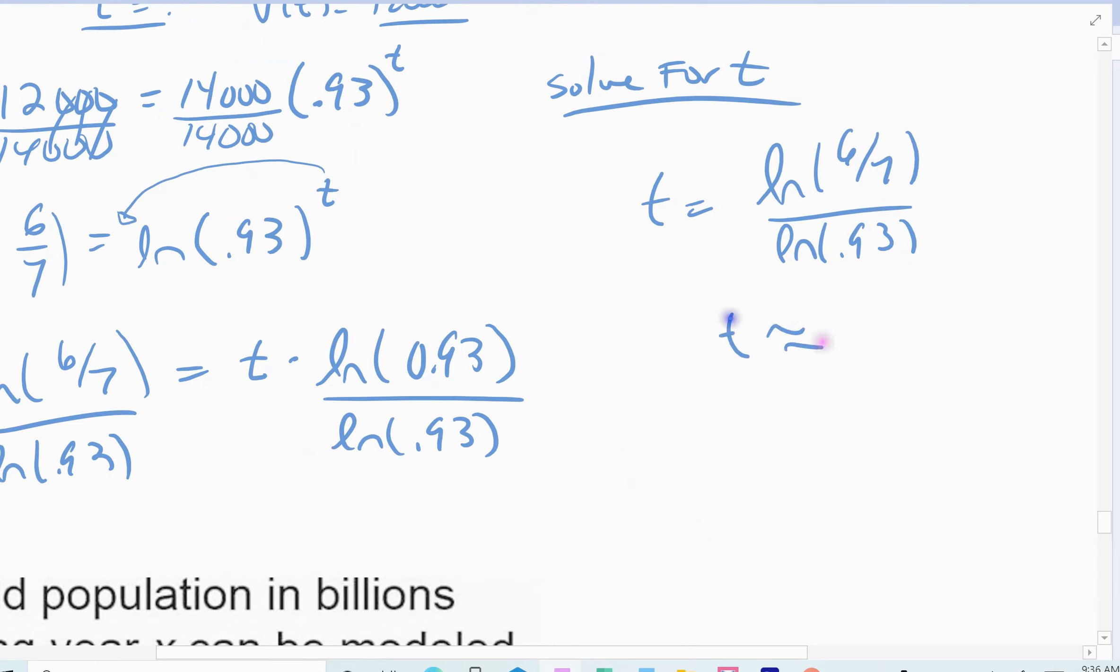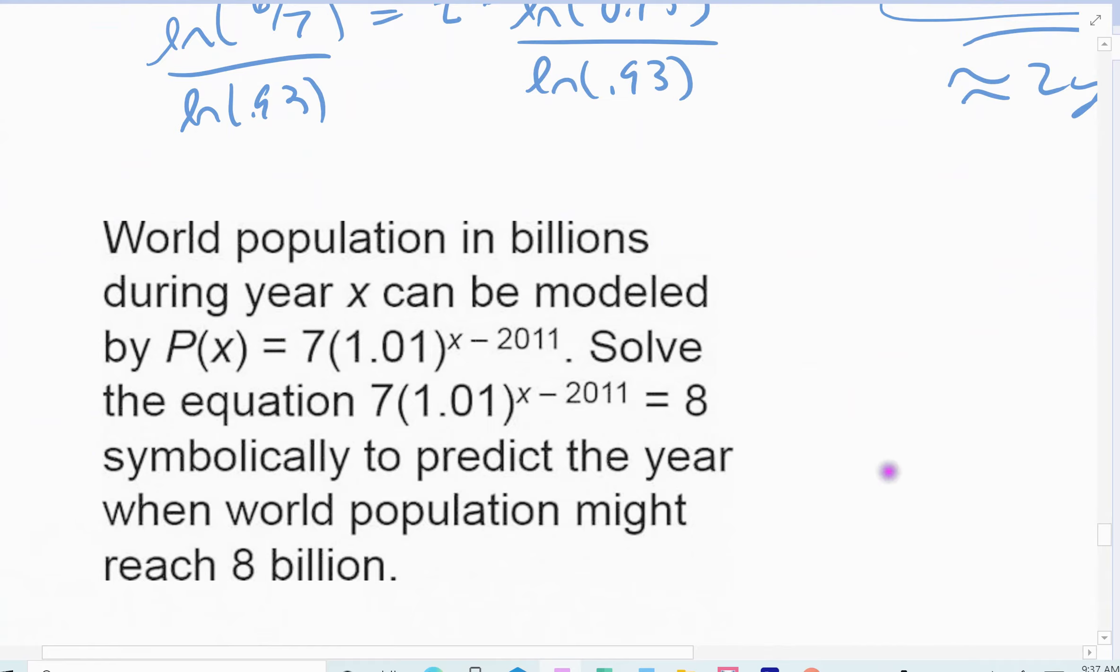And so t is exactly the natural log of 6/7 divided by the natural log of 0.93. And then I find the approximate t. So take the natural log of 6/7 divided by the natural log of 0.93. Comes out to 2.124 years. So approximately two years if we round to the whole year. So it's going to take about two years to drop by $2,000.